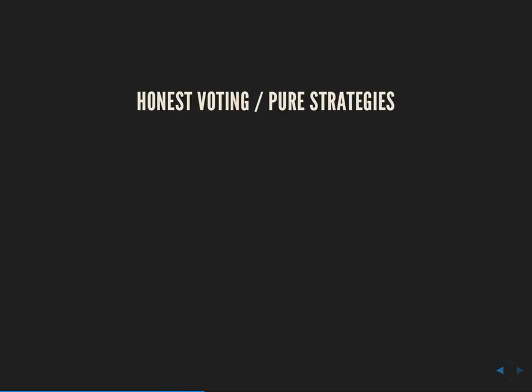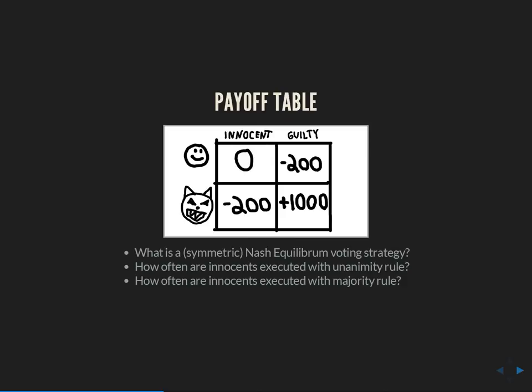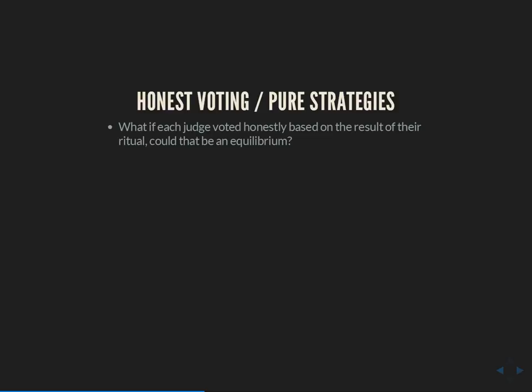The first step is to talk about honest voting and pure strategies. Honest voting is when a judge votes exactly as he would if he were the sole decider. With these payoffs, if you were a judge acting by yourself and think there's a 90% chance he's a werewolf, you vote to execute. If you think there's a 90% chance he's innocent, you vote to let him go. That would be honest voting — just doing your badger milk ritual, looking at the result, and voting based on that. The question: could honest voting be an equilibrium?